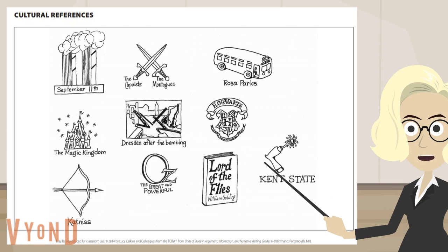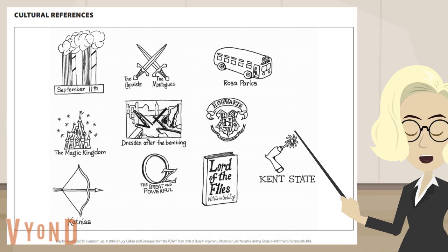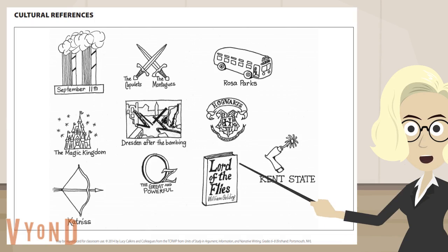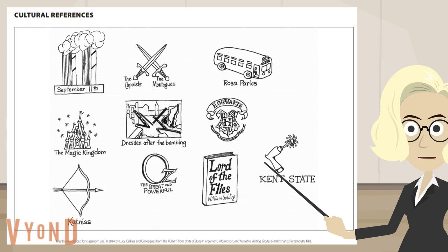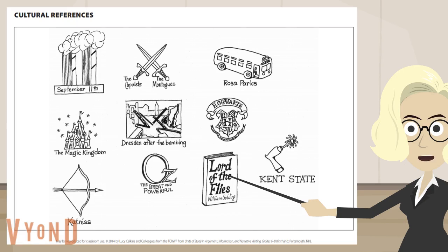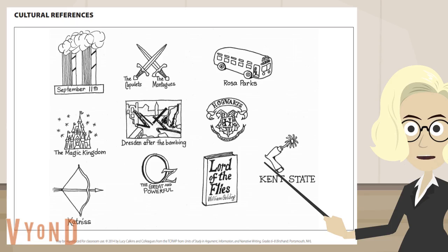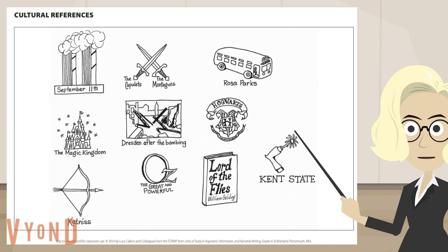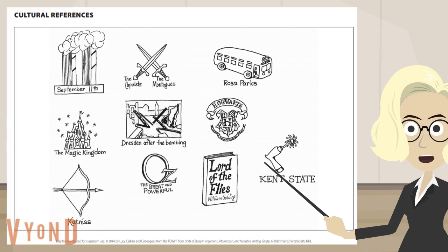Now I'm going to show you a list of references — names of people, places, or events. And if you know the reference, each term will mean a lot to you. If you don't, it won't. Picture that someone says to you, 'It was like blank,' and then you fill in the reference.